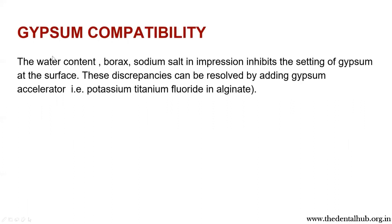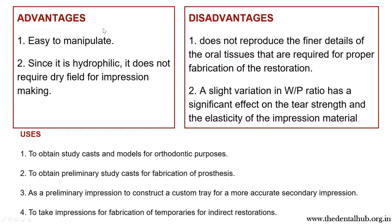Coming to gypsum compatibility: the water content, borax, and sodium salt in the impression inhibit the setting of gypsum at the surface. These discrepancies can be resolved by adding a gypsum accelerator — potassium titanium fluoride — to the alginate. Advantages include ease of manipulation and hydrophilicity, so it does not require a dry field for impression making. Disadvantages include that it does not reproduce finer details of oral tissues required for proper fabrication of restorations, and a slight variation in water-powder ratio significantly affects tear strength and elasticity. Uses include obtaining study casts, preliminary casts for prosthesis and orthodontic purposes, as a preliminary impression to construct a custom tray for a more accurate secondary impression, and for fabrication of temporaries for indirect restoration.